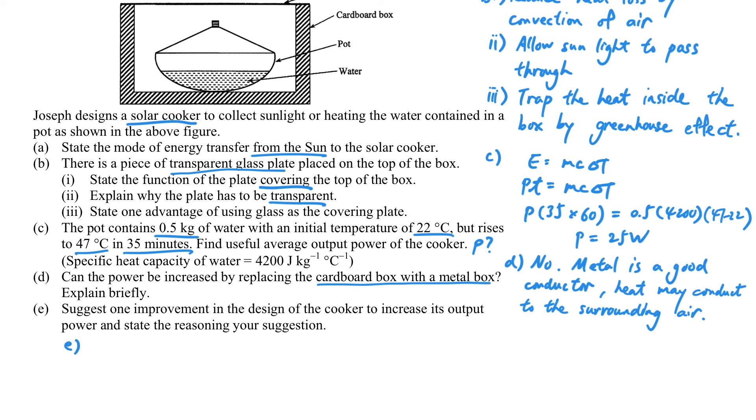Finally, can you suggest an improvement for the design? When we talk about improvement, we won't have a big change in the design, but we will try to mention something that the question doesn't mention. For example, one improvement is the outside surface of the pot can be painted with black color so that it can absorb the radiation more effectively.